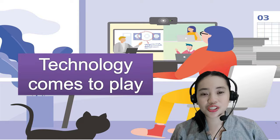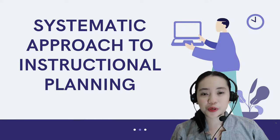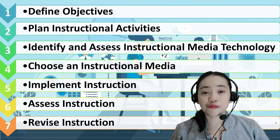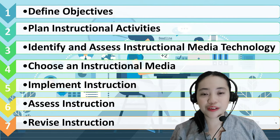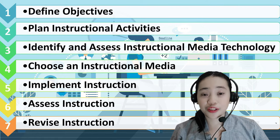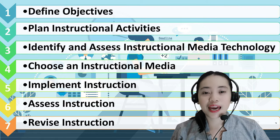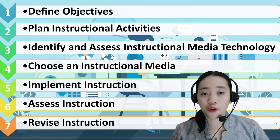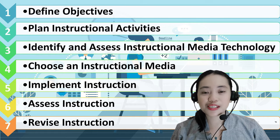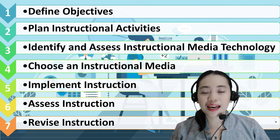Before we dig into the roles of technology, let's identify first the systematic approach to instructional planning. These are the following: First, define objectives. Second, plan instructional activities. Third, identify and assess instructional media technology. Fourth, choose an instructional media. Fifth, implement instruction. Sixth, assess instruction. And seventh, revise instruction.